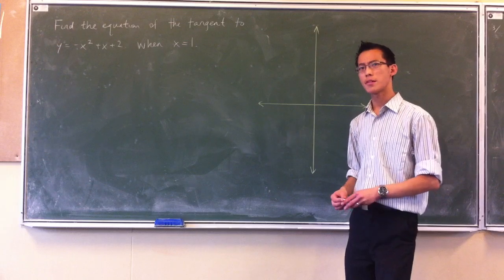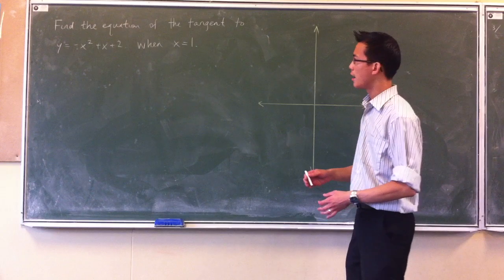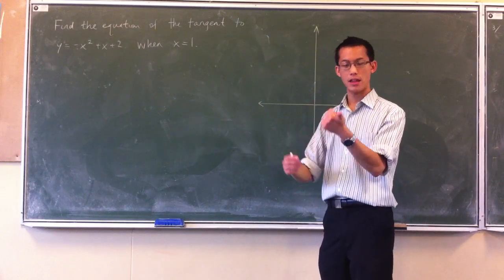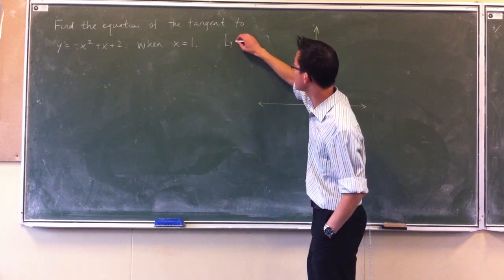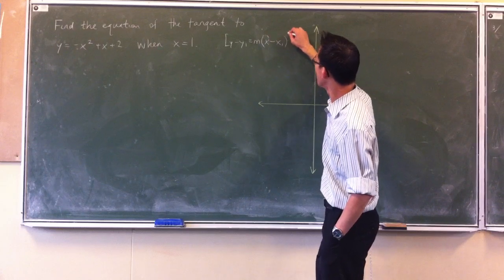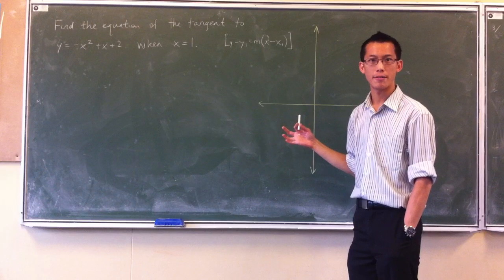Well, you want to think about what do you need to find the equation of a tangent. You want to find the gradient of that tangent and the point that it goes through. So in other words, you're going to be using the point gradient form for the equation of a line.